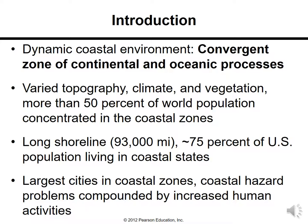The dynamic coastal environment is a convergent zone of continental and oceanic processes. This is a transitional depositional environment where you see a lot of sediments depositing between the continent and the oceanic system. Places like deltaic regions, lagoons, or estuaries are considered coastal environments, representing the convergence between the continent and the ocean.